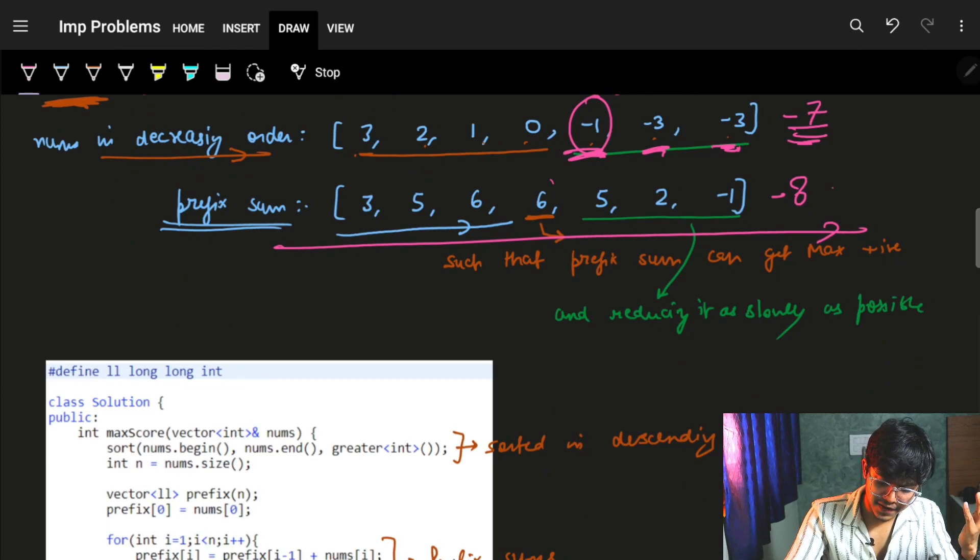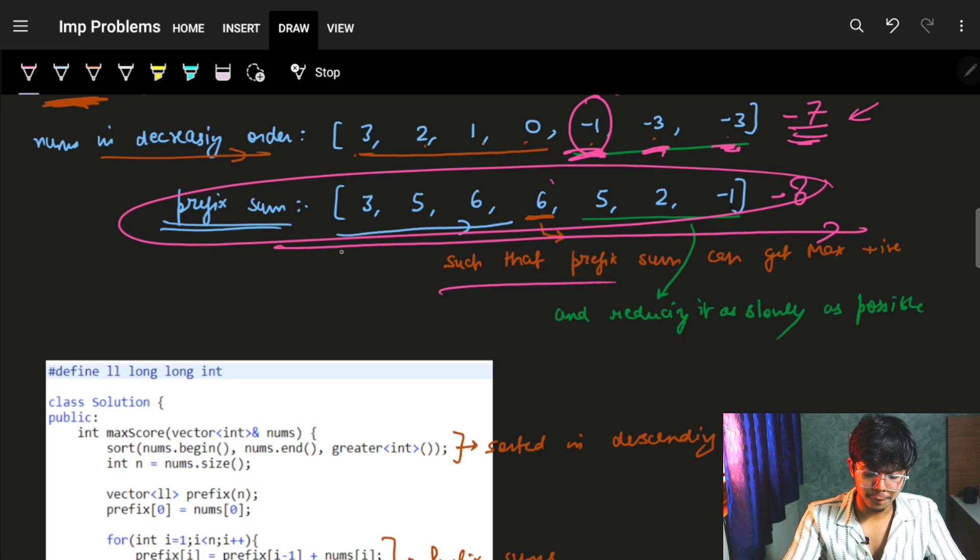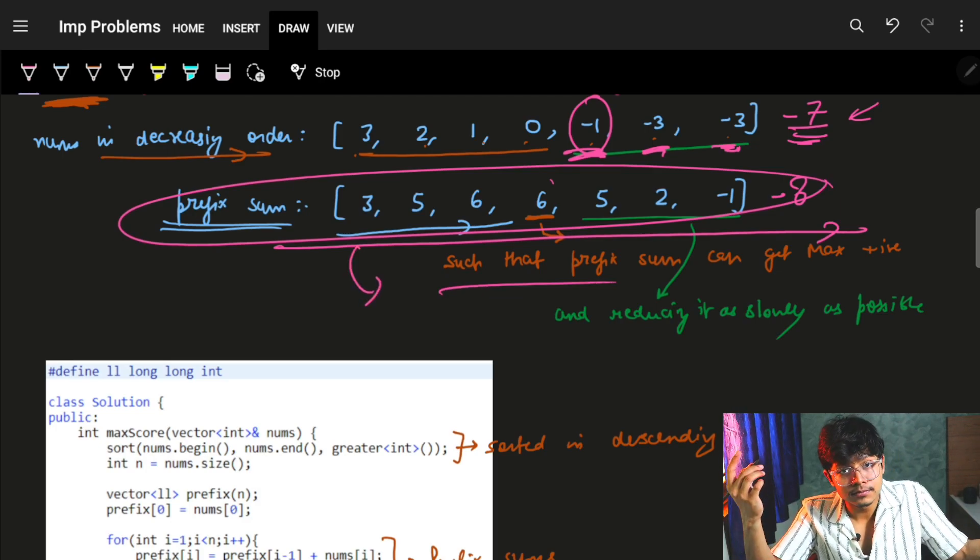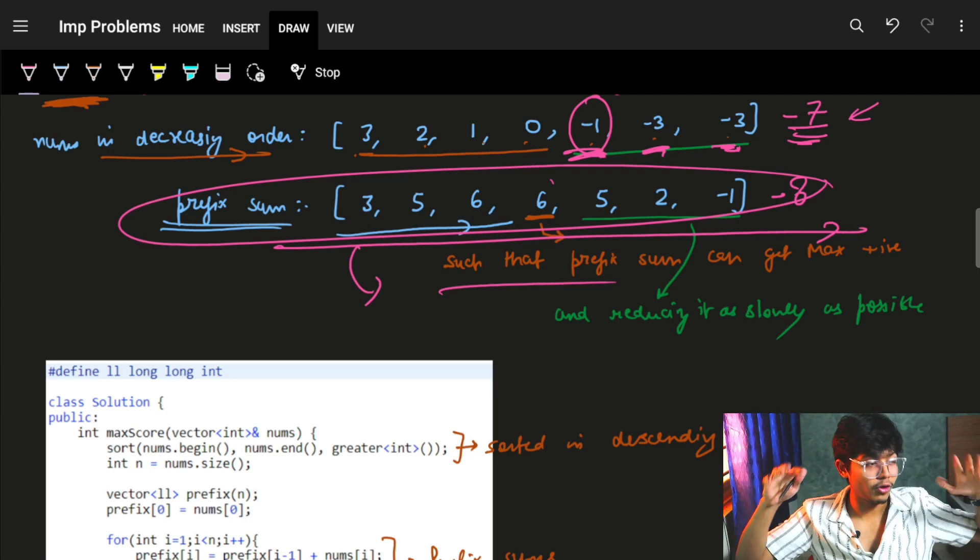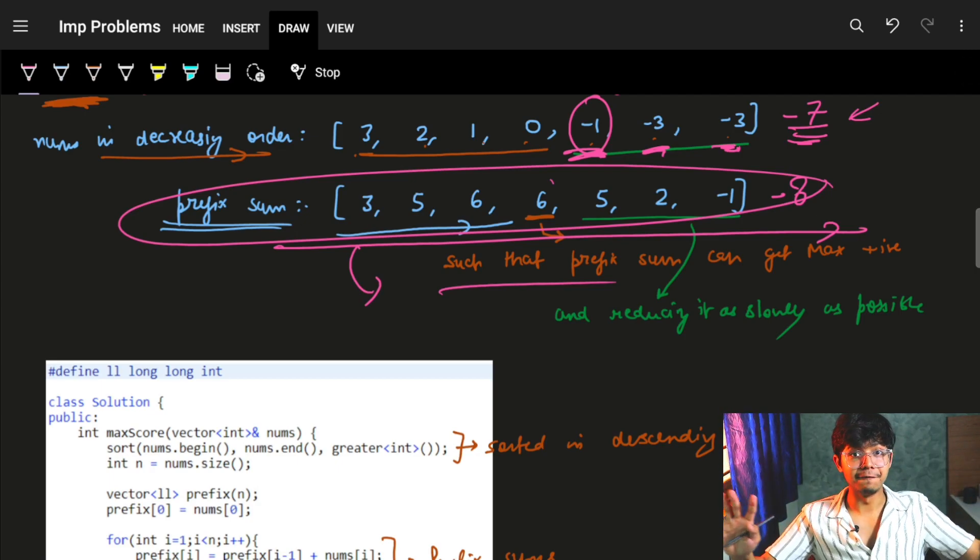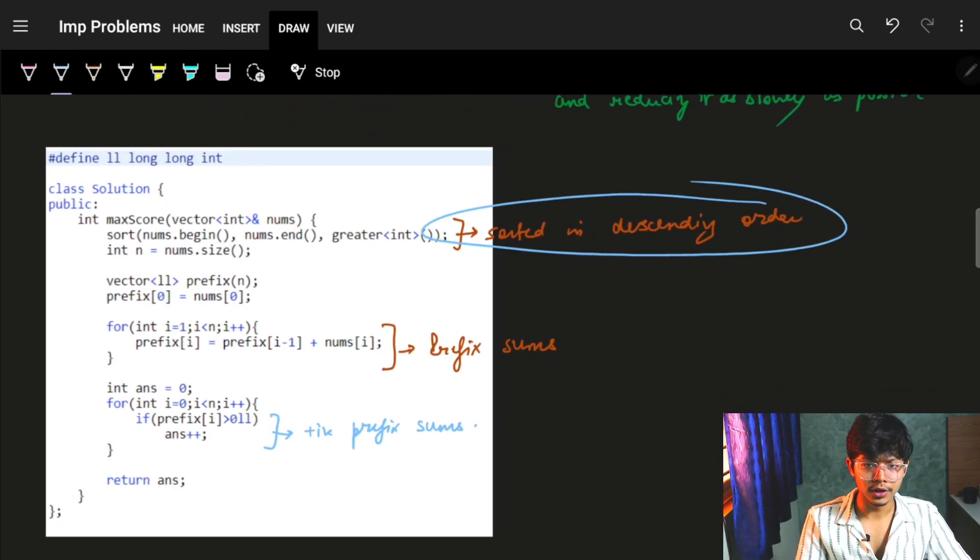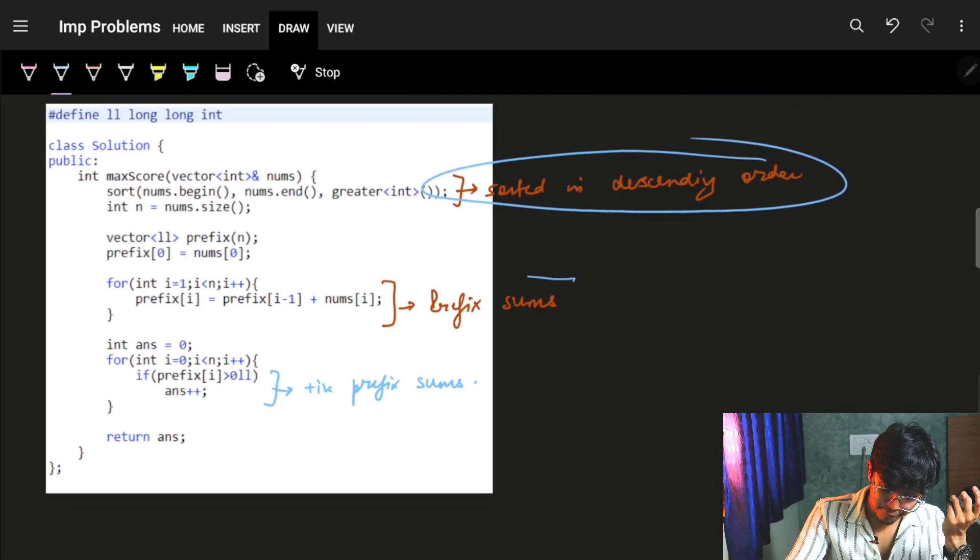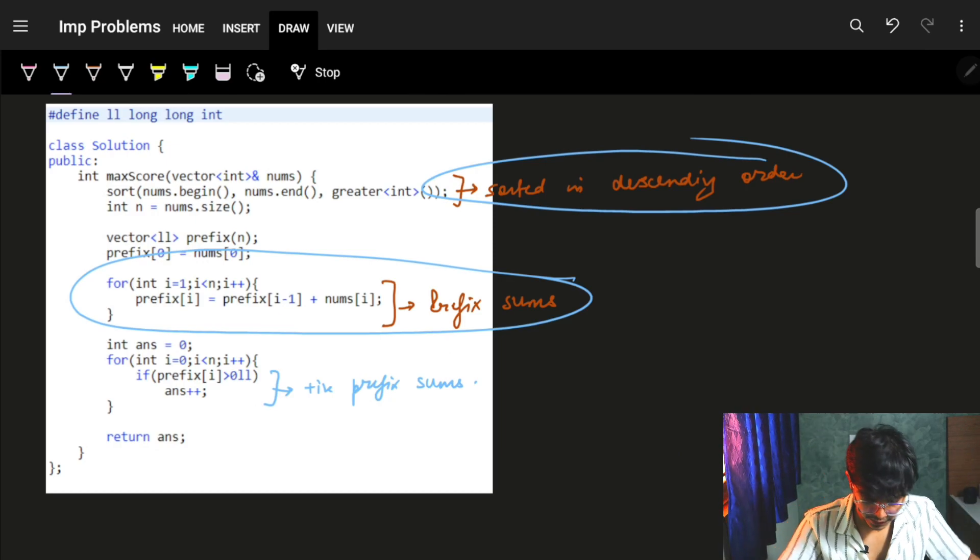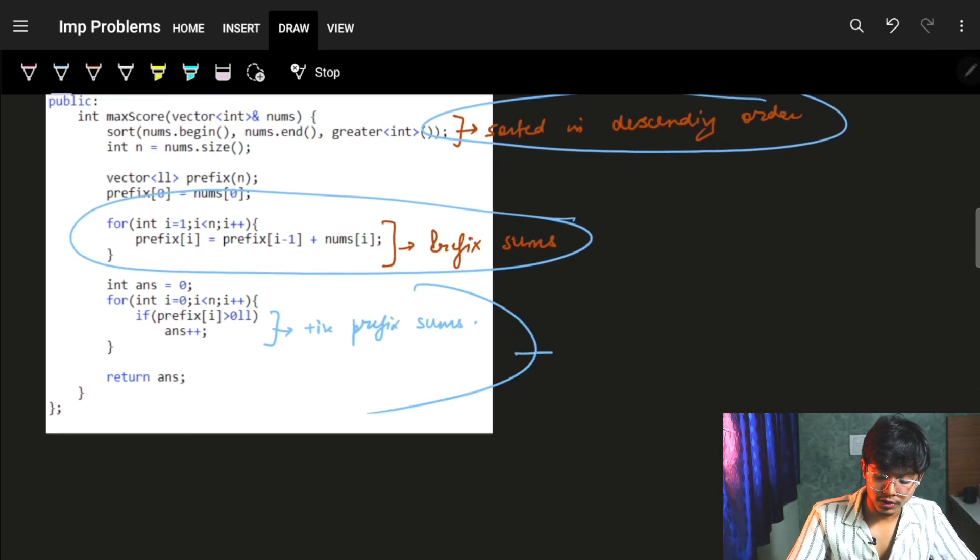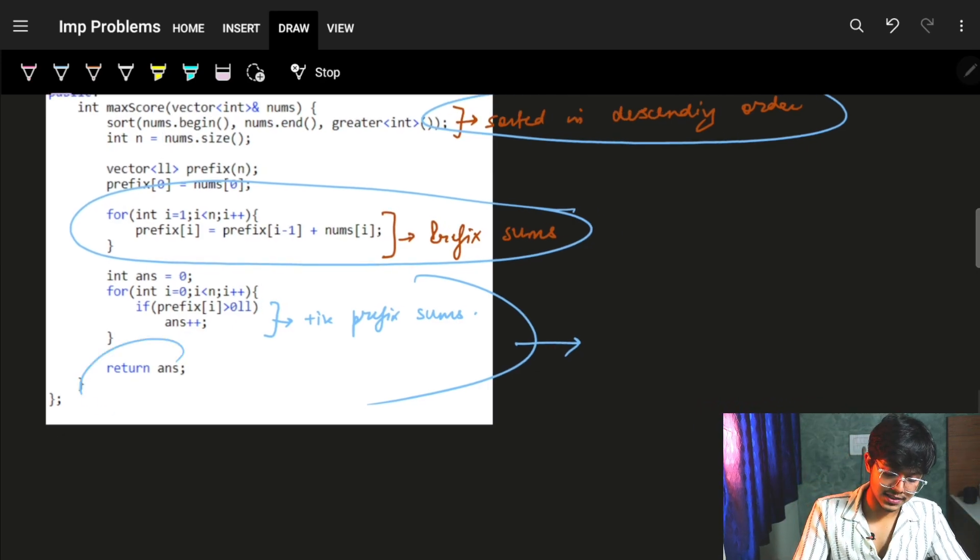It's just that—find its prefix sum, which means after sorting my nums array in decreasing order, find its prefix sum, and the number of positive integers in this prefix sum is the maximum number of positive numbers we can get, because we choose greedily everything. And it's the same thing which we did in the code. Firstly, we sorted it in decreasing order. And then we found the prefix sums as standard: prefix of i is prefix of i-1 plus nums of i. Then we found how many prefix sums are positive, and that's the ultimate answer.